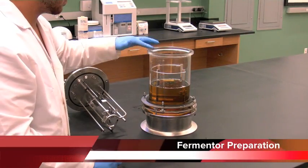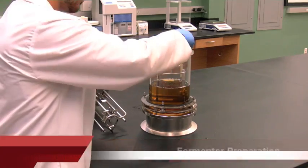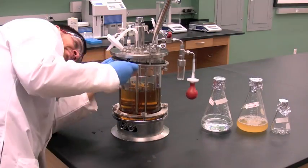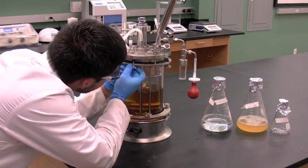Apply a thin layer of lubricant around the top surface of the glass vessel. Set head plate in place and secure metal rings using four bolts. Tighten bolts evenly.